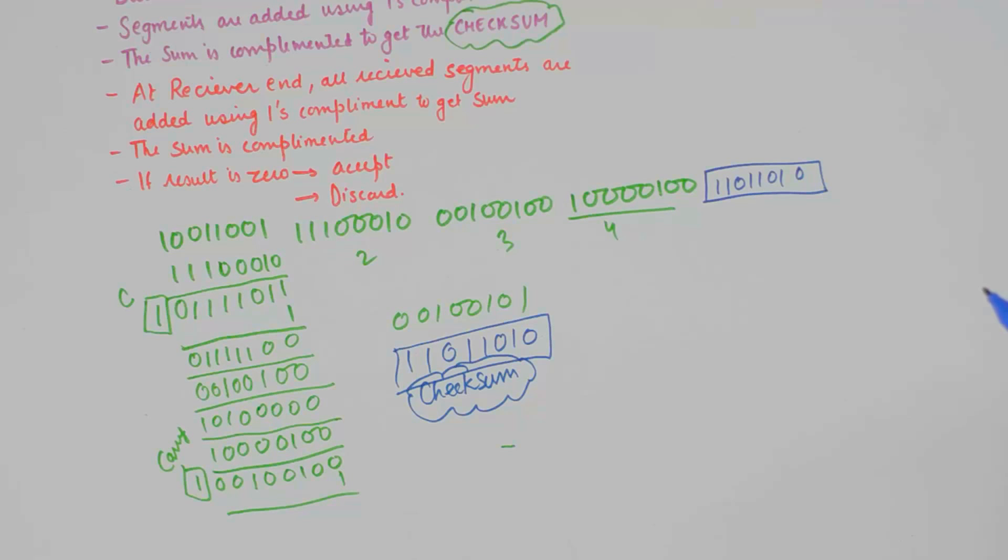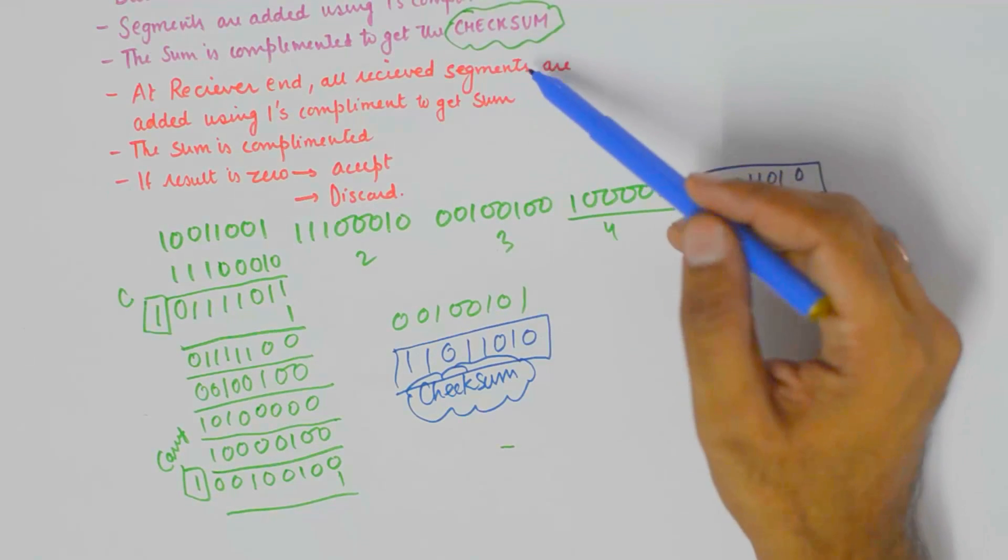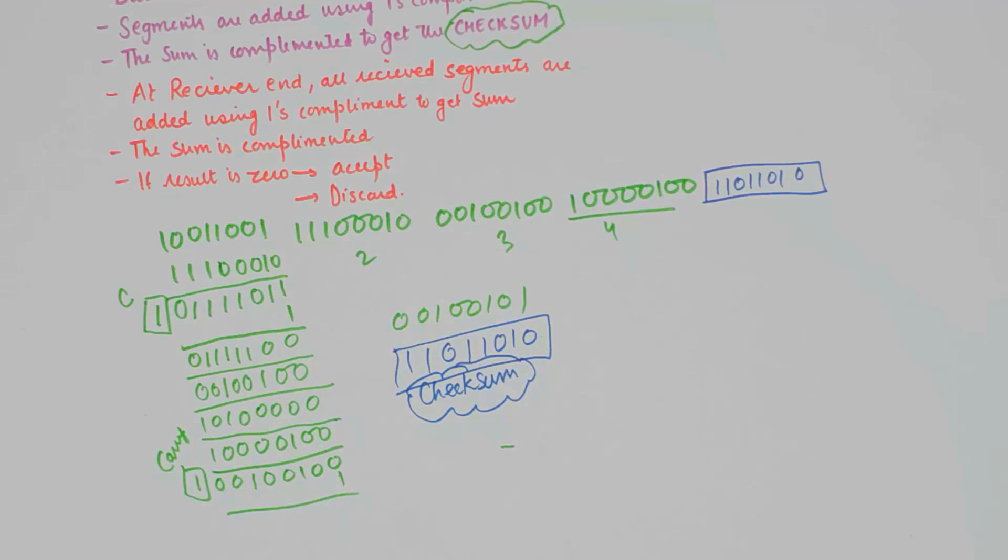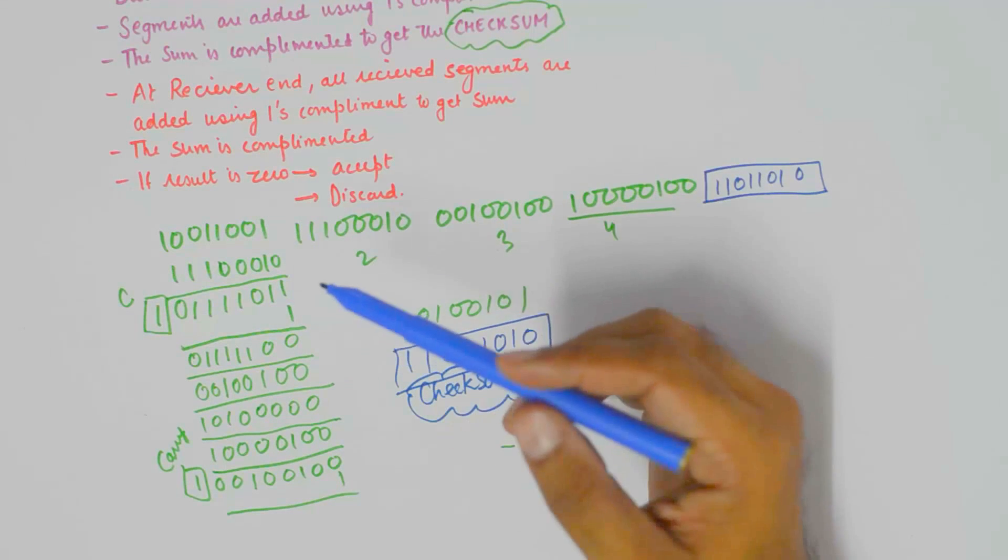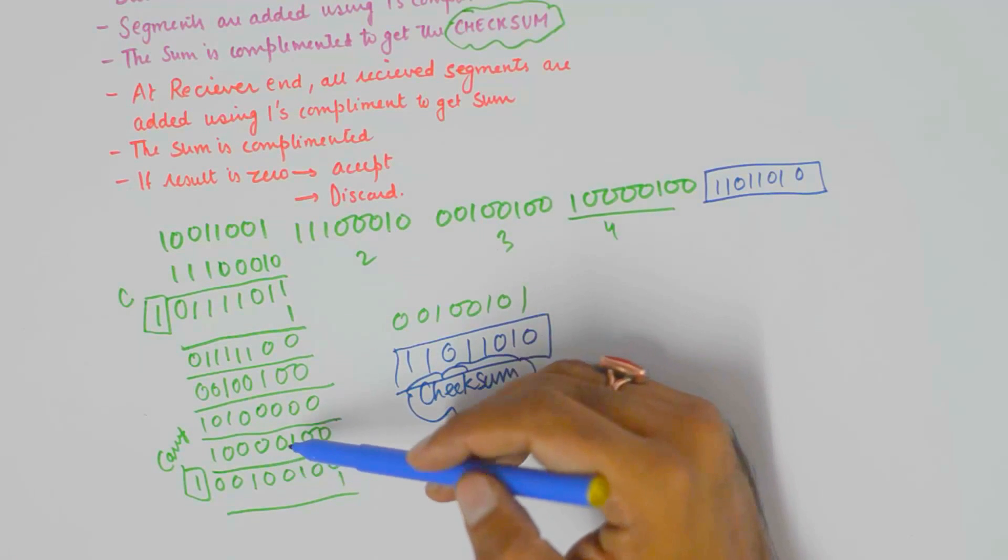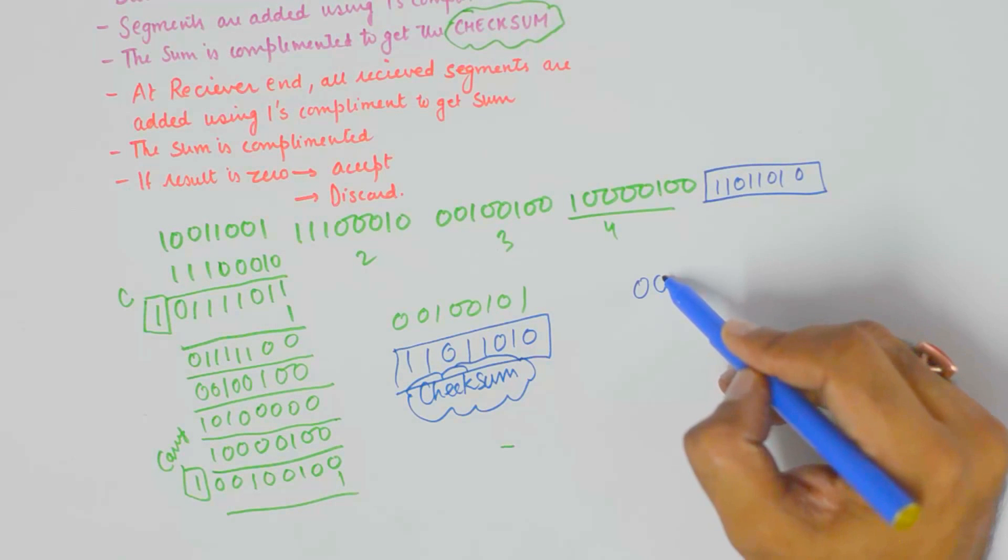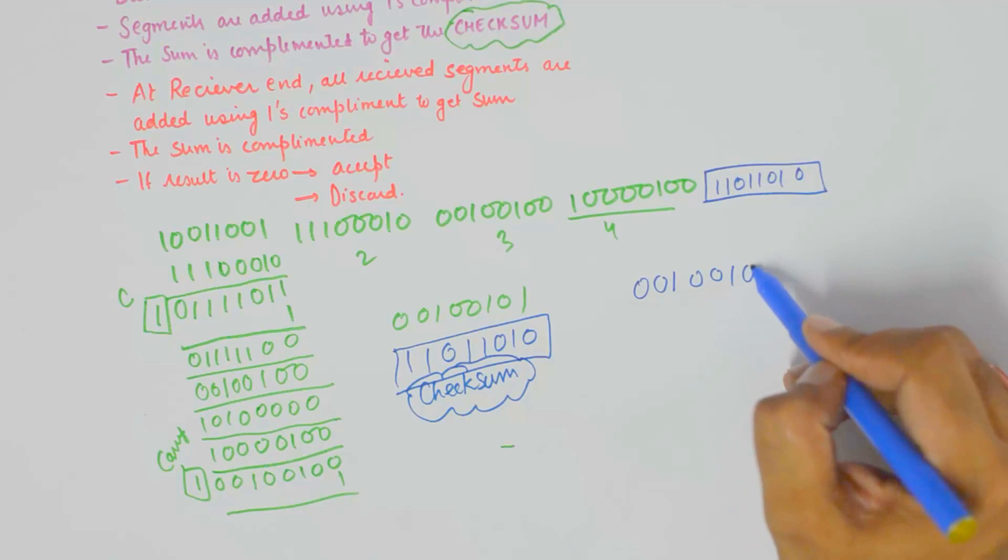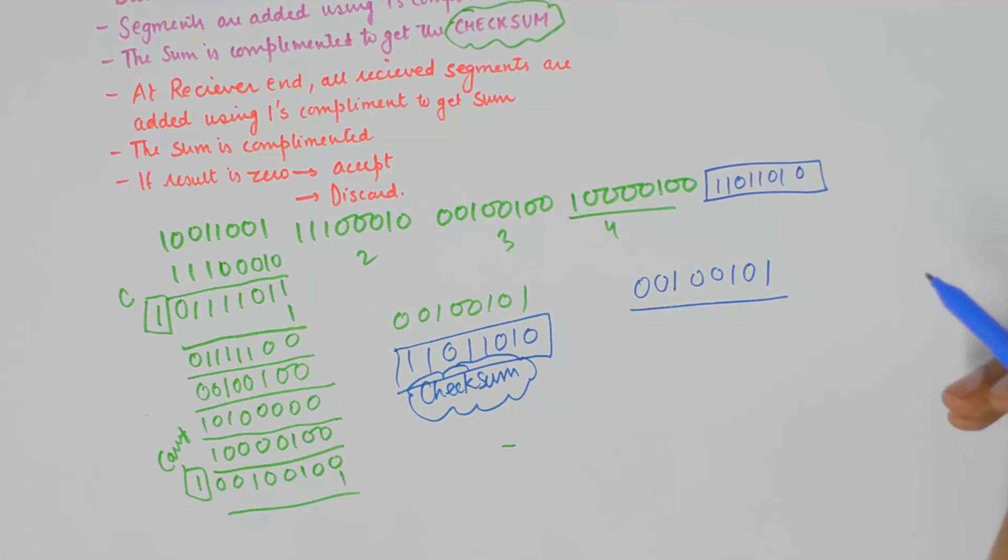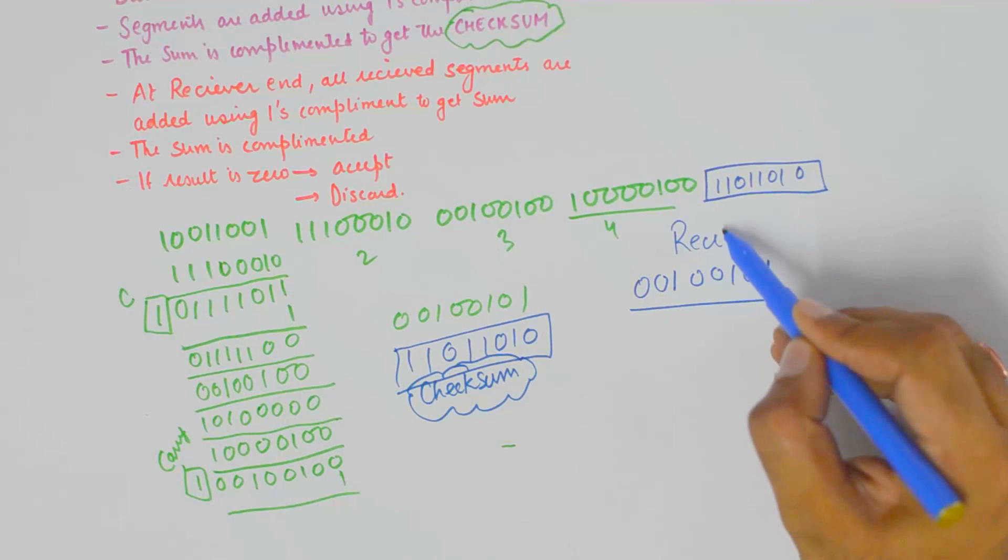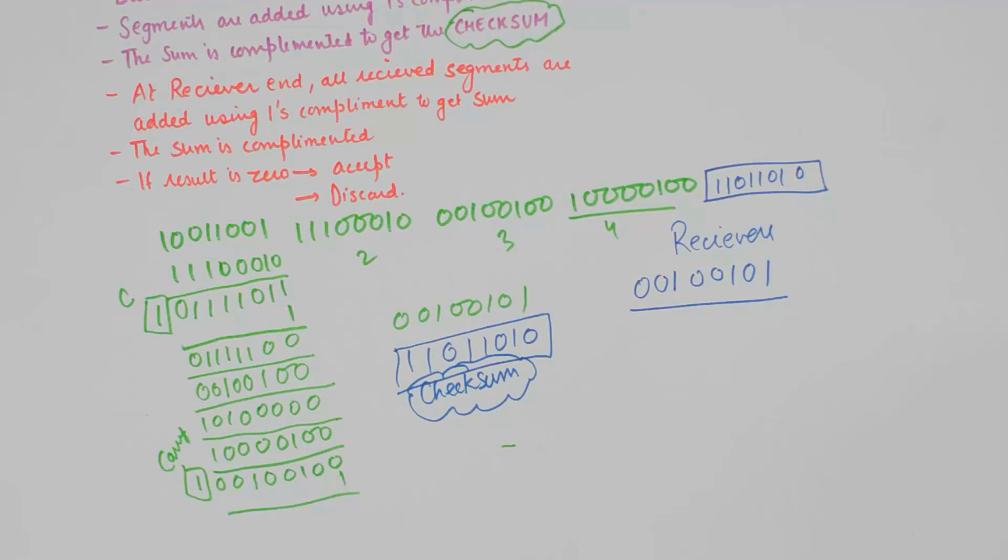The receiver will take help of this checksum to find out if there is any error. At the receiver the data is also added. And all the segments are added using 1's complement, just like the way we did here. And if we get 00100100 as the addition of 4 segments at the receiver.